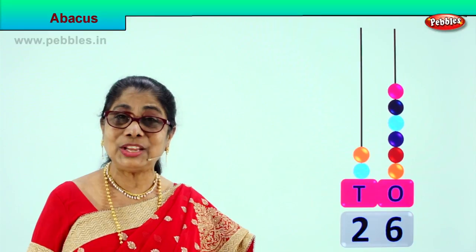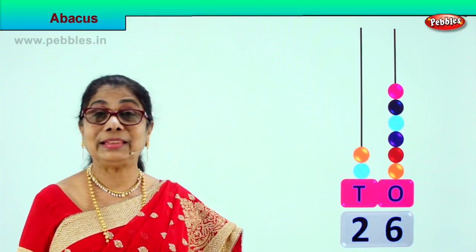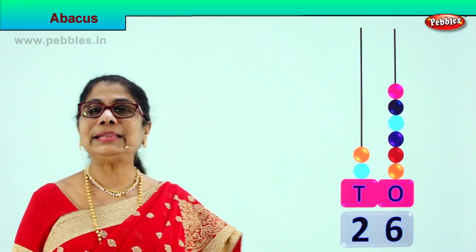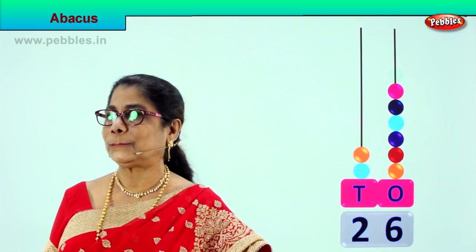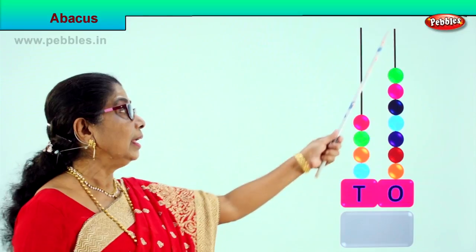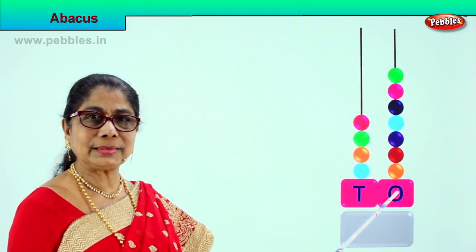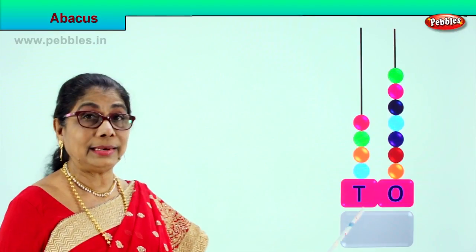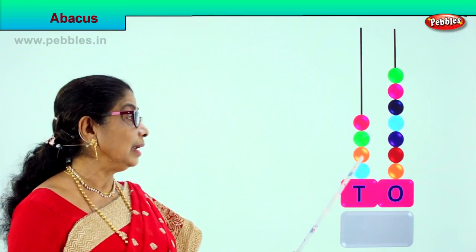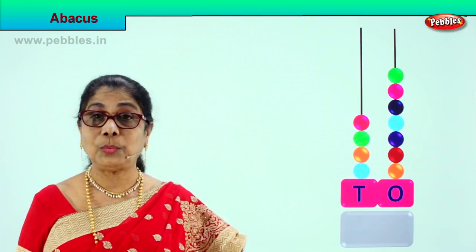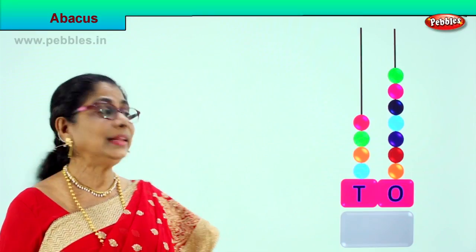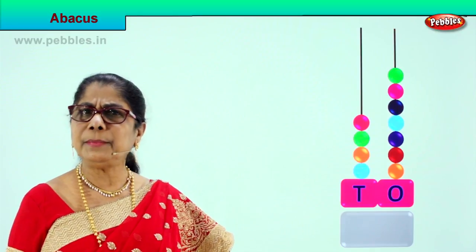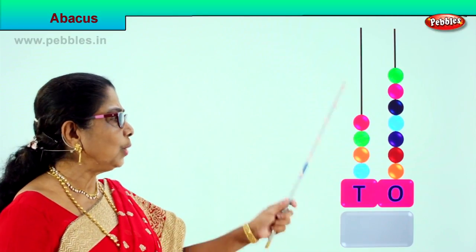Did you understand? Every bead on the first rod is ones — you cannot put more than 9. Every bead on the second rod is tens, and every single one equals 1 ten. Let's go to the ones place and count the number of beads.